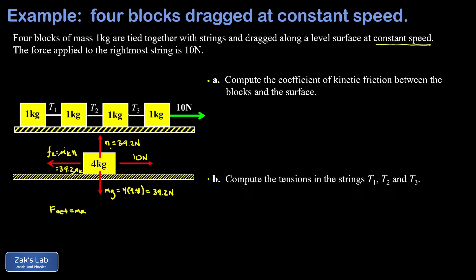We apply Newton's second law: F_net = ma. The acceleration is zero because the system moves at constant speed. Taking right as positive, we have 10 newtons to the right minus 39.2μk to the left equal to zero. Solving for μk gives us 0.255. That answers part a.